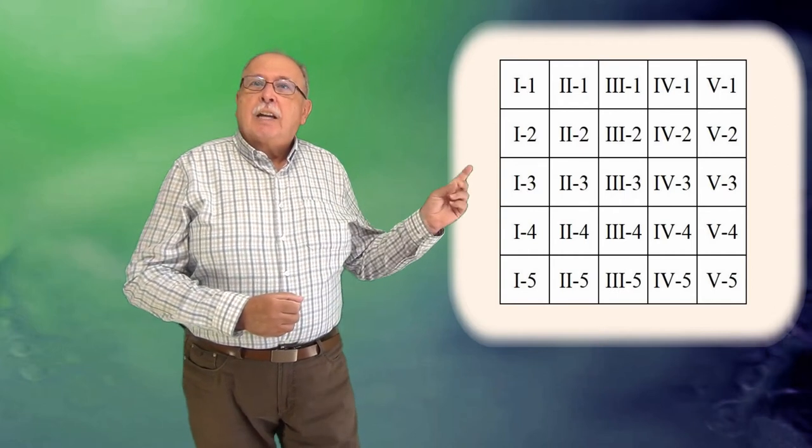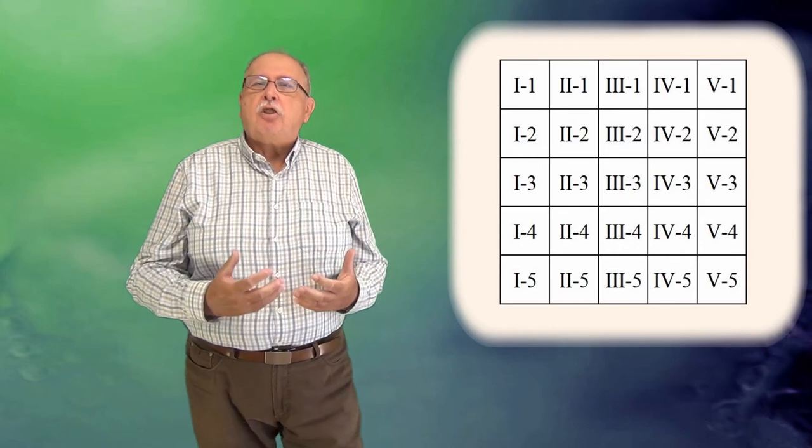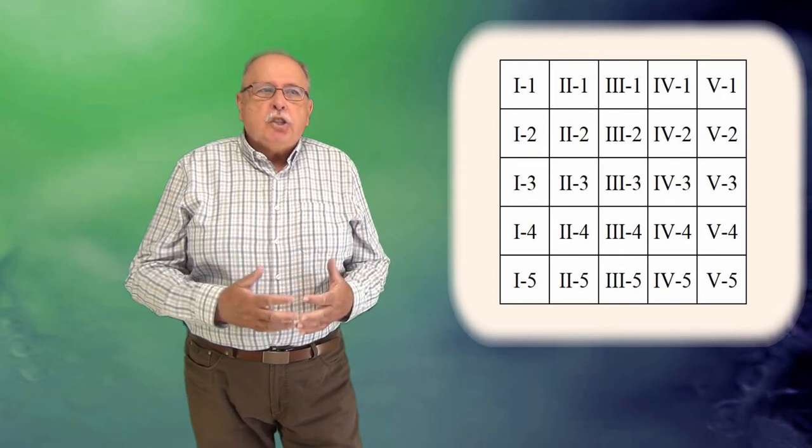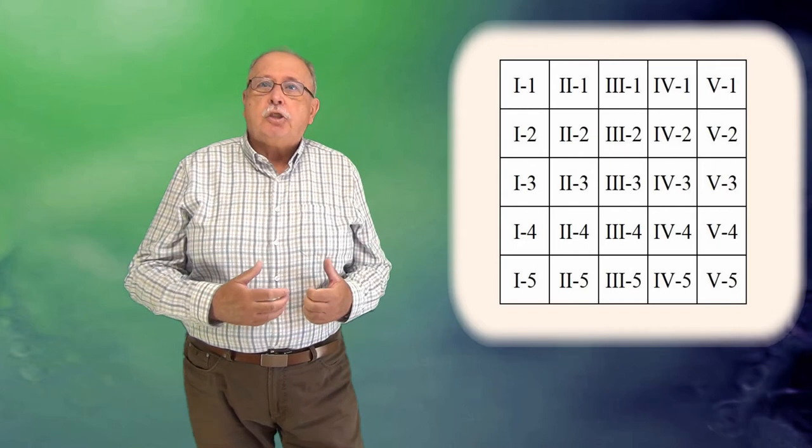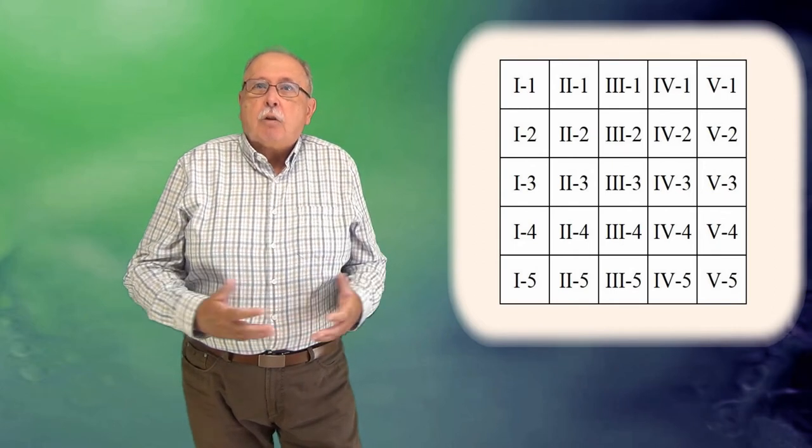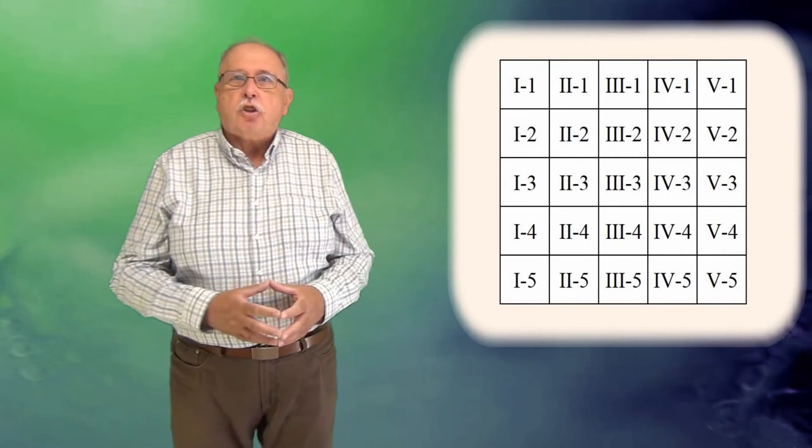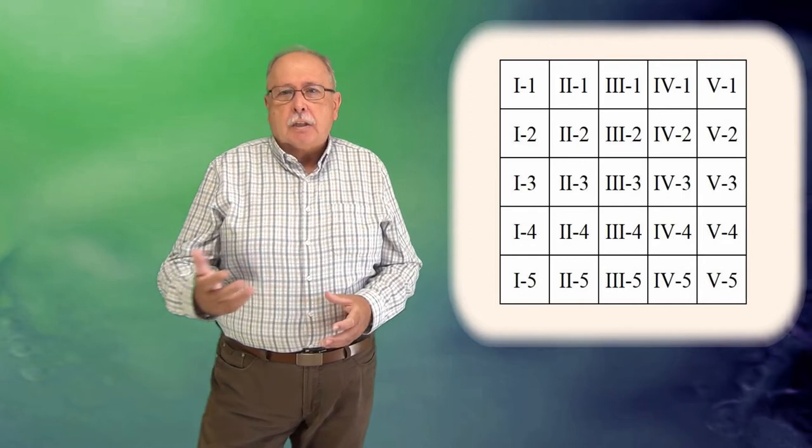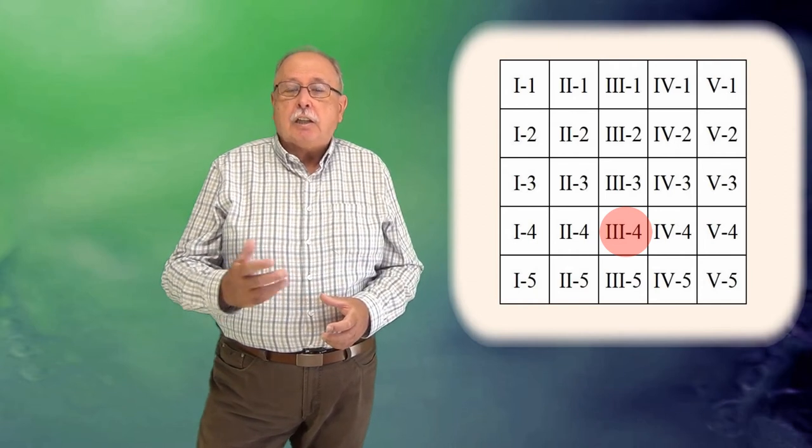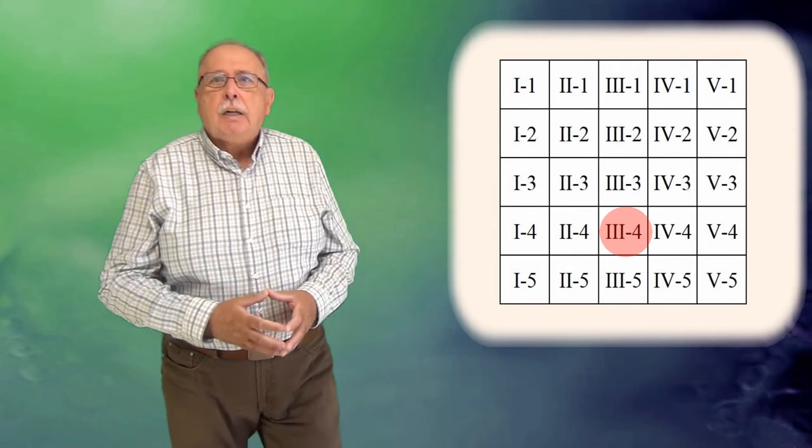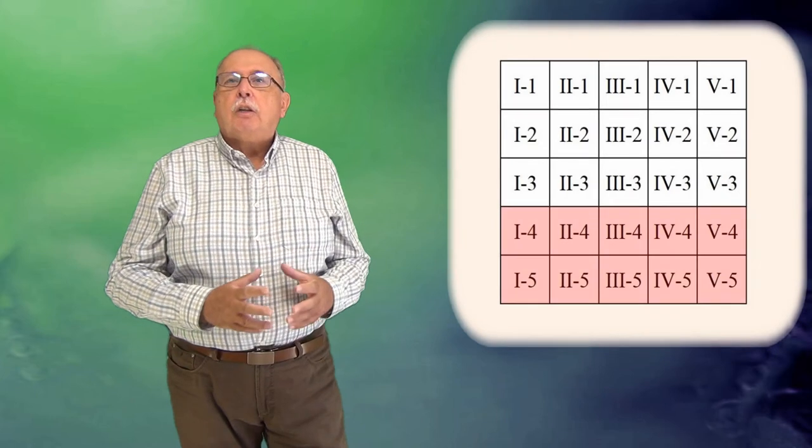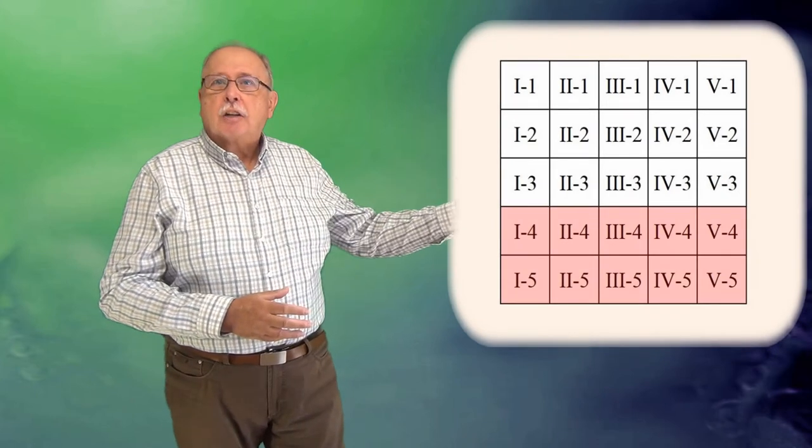Acum, putem să eliminăm niște mașini. Pe noi ne interesează cele mai rapide 3. Înseamnă că, într-o primă etapă, putem elimina toate mașinile care au venit pe locurile 4 și 5 în cursele preliminare. Ele nu au cum să fie în primele 3 din 25, deoarece au deja 3 mașini mai rapide decât ele. De pildă, mașina 3-4 are mai rapide decât ea mașinile 3-3, 3-2 și 3-1 din tabel. Și așa mai departe. Să eliminăm, deci, toate mașinile de pe locurile 4 și 5 din cursele preliminare și ajungem la acest tabel.